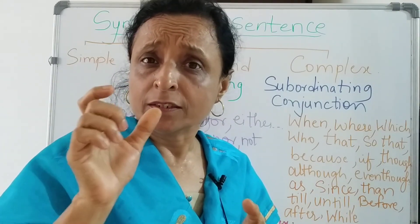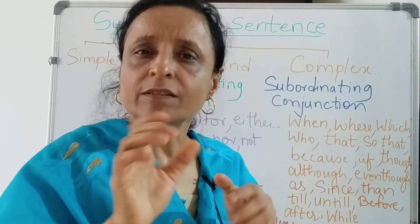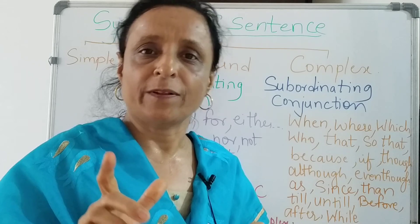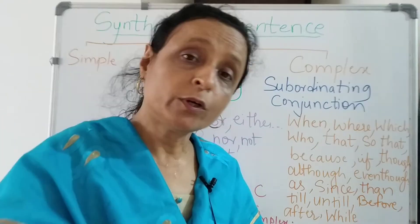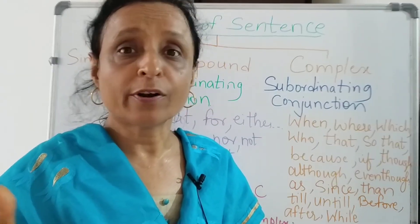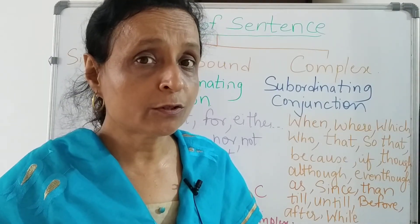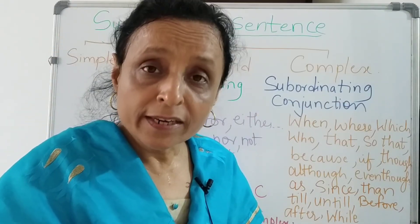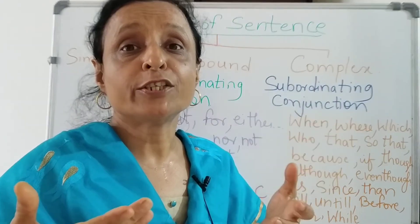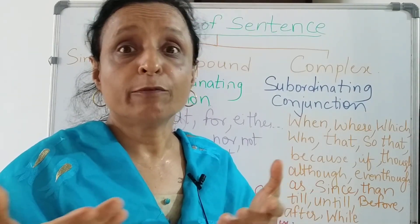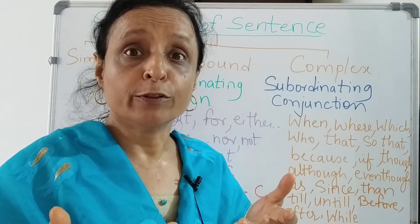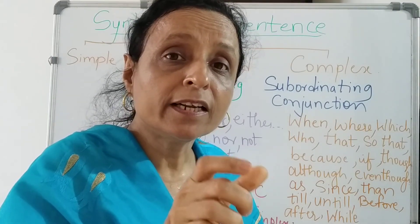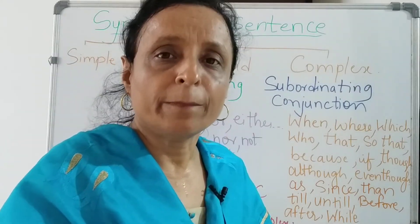Now what makes a simple sentence? When there is no coordinating and subordinating conjunction, then it is a simple sentence. When you put coordinators — and, but, for, either/or, neither, not only but also — then it becomes a compound sentence. When you put a subordinating conjunction like which, what, who, till, until, before, though, although, even though — all these are subordinating conjunctions — then it becomes a complex sentence.